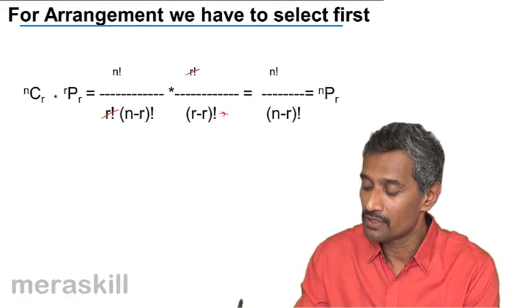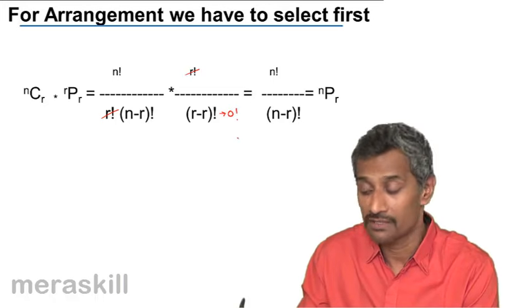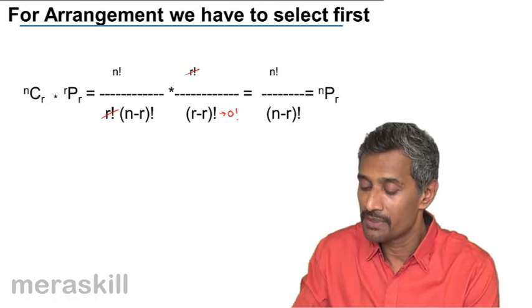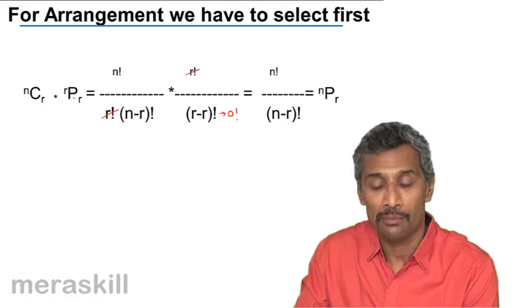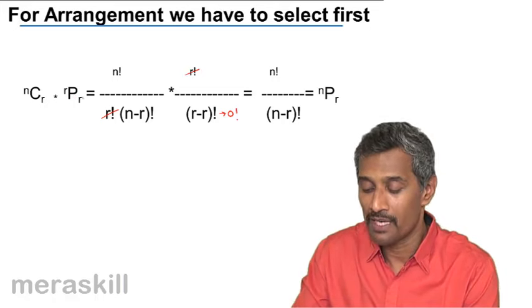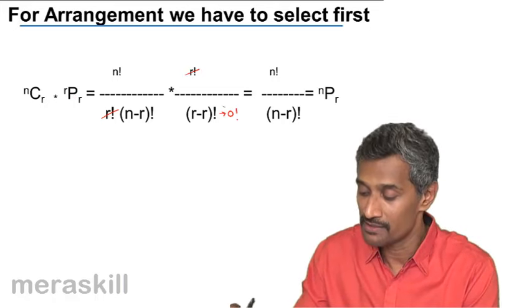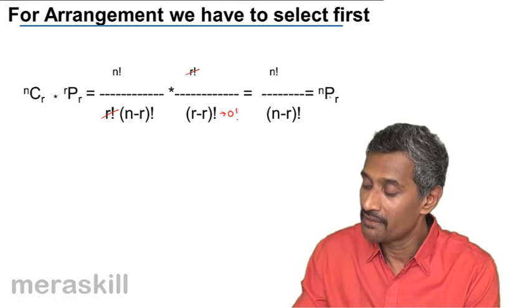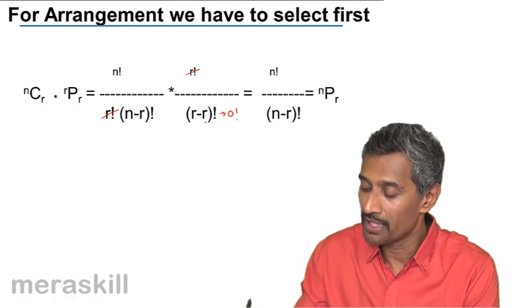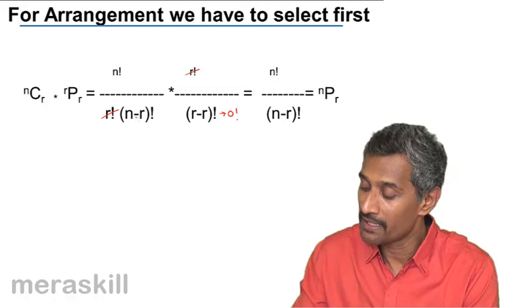And r minus r factorial is nothing but 0 factorial, which is the same as 1. So that means nCr into rPr is also r factorial, which is nothing but nPr, n factorial upon n minus r factorial.